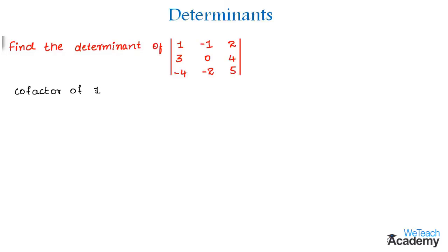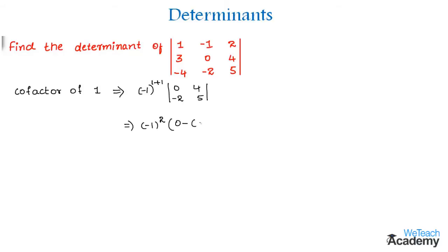Let us find the cofactor of element 1. We multiply the minor by (-1)^(i+j), where i represents the row and j represents the column. Here we get (-1)^(1+1) into its minor, obtained by deleting the row and column in which 1 is present. We find the determinant of the 2x2 matrix [0, 4; -2, 5], which gives (0×5) - (4×-2) = 0 - (-8) = 8. So the cofactor of element 1 is 8.